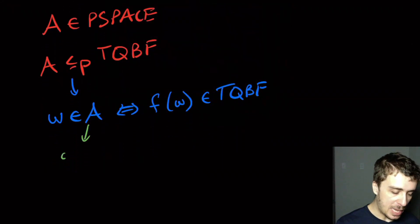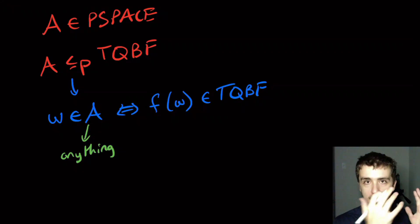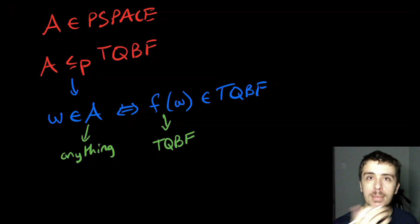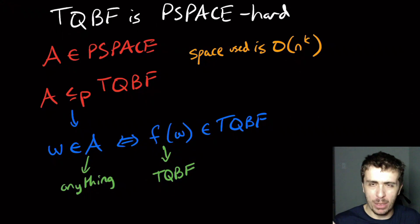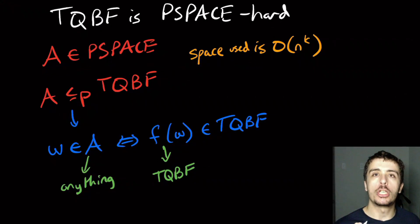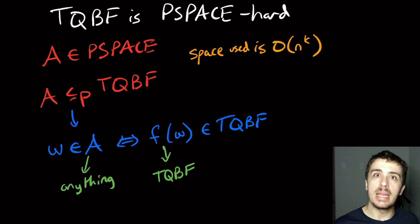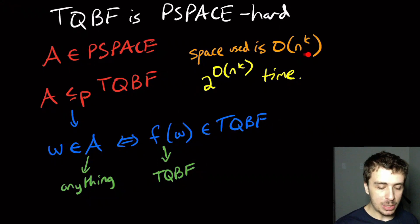This reduction must work for any polynomial-space language A. We know nothing about A other than that its algorithm runs in polynomial space — say n^k space. The reduction must produce a valid totally quantified boolean formula. If the algorithm runs in n^k space, the number of configurations is exponential in space, so the runtime is at most 2^(O(n^k)) in the worst case.